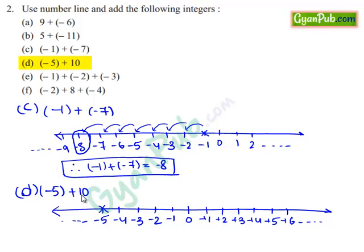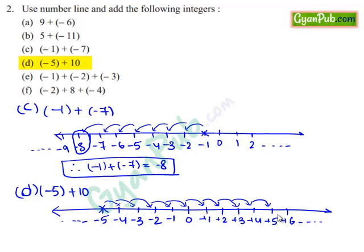And then we will add 10 to this integer minus 5. For this, we will move 10 steps to the right of minus 5: 1, 2, 3, 4, 5, 6, 7, 8, 9 and 10. We reach plus 5 on this number line. So, when we add minus 5 and 10, we reach plus 5.